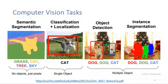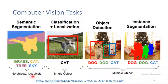What are object detection and image segmentation? The first example is semantic segmentation. Semantic segmentation tries to classify each pixel into different classes. It does not try to identify objects — it just tries to classify pixels. It's pixel-level classification.